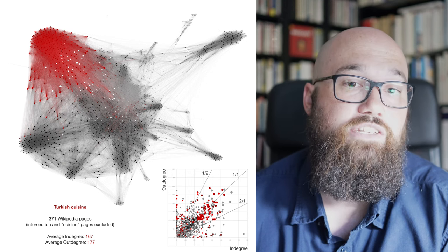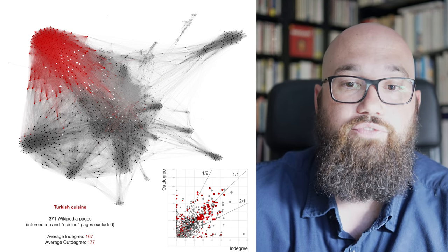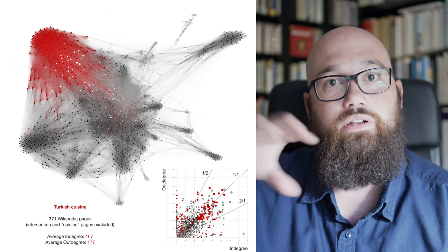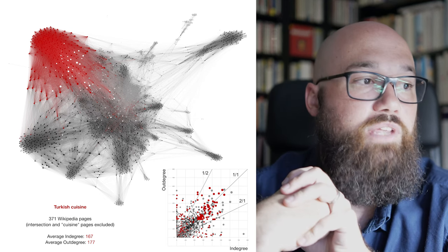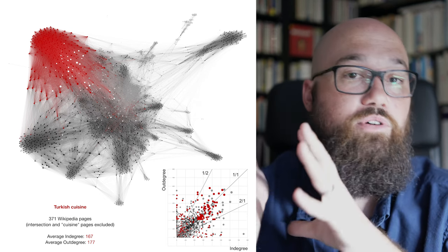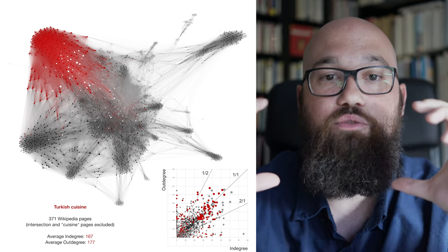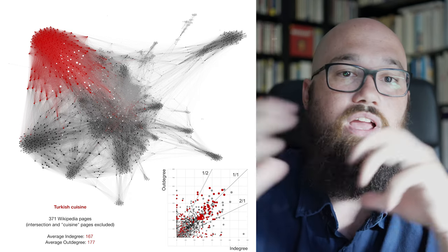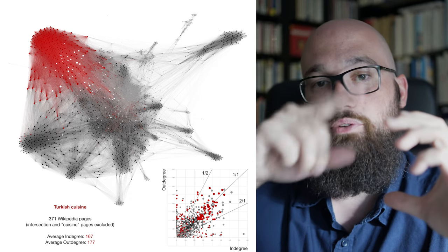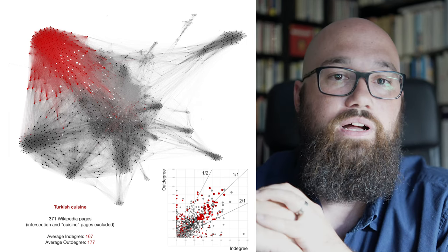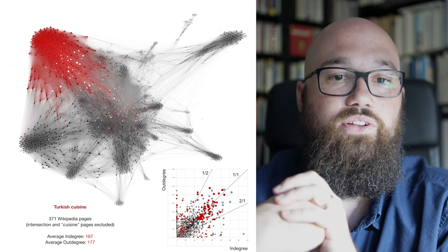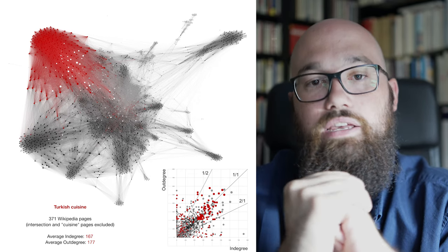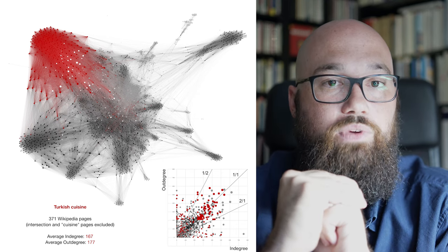What we see is the fact that, especially for the Turkish cuisine, there is a very strong internal relation pattern in this sub-network, which probably means that in terms of Wikipedia pages, there is a very large footer element on the page or a very large info box where everything is making links to everything, basically, which also makes the average in-degree and out-degree of this sub-network much higher than for the other examples we've chosen here.